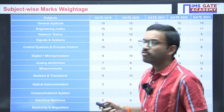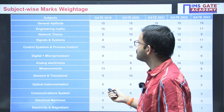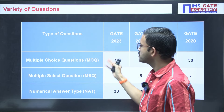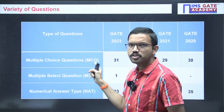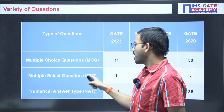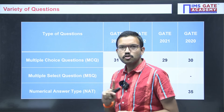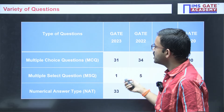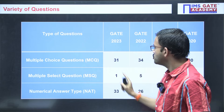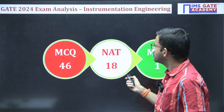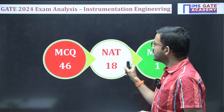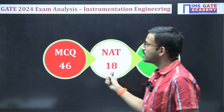Now regarding the variety of questions compared to previous years: in the GATE exam we have three types of questions — MCQ, where only one option is correct among four choices; MSQ, where one or more options can be correct; and NAT. For MSQ and NAT, there is no negative marking, and for MSQ there is no partial marking either. In 2023, there was only 1 MSQ, 31 MCQs, and 33 NAT questions. In the 2024 IN paper, there is again only 1 MSQ — from engineering mathematics — 18 NAT questions, and 46 MCQ questions.